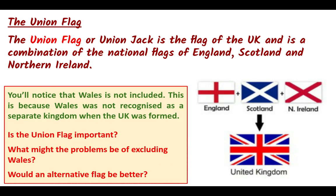The first and most obvious thing they have in common is a flag. The Union Flag, or the Union Jack, is the flag of the UK. It's a combination of the national flags of England, Scotland and Northern Ireland. Wales is not included because Wales was not recognised as a separate kingdom when the UK was formed.